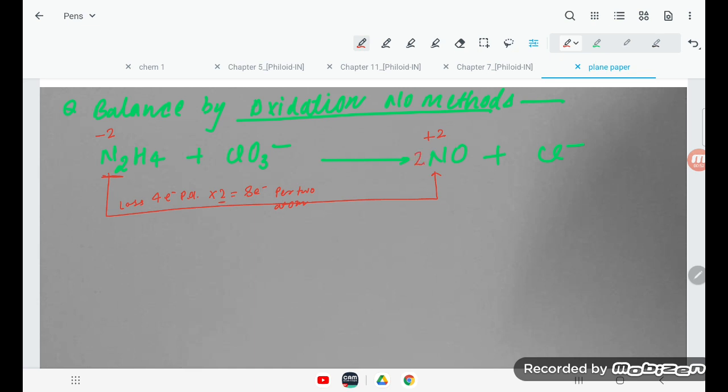Now go for the other thing, CLO3 minus. Here oxidation number is how much? Plus 5. And here is minus 1. So it is the gain of 6 electrons per atom.